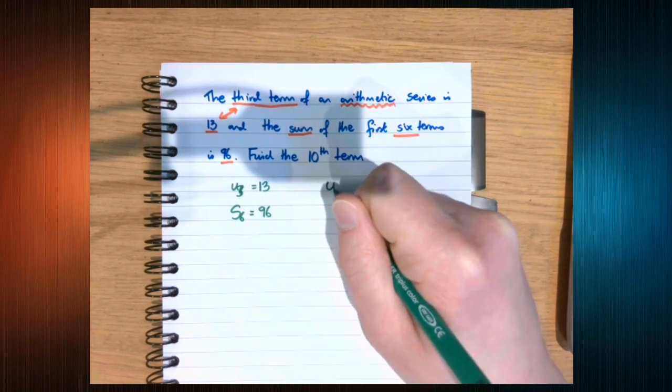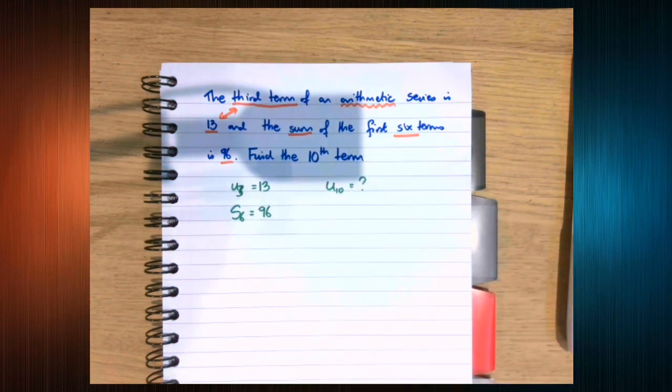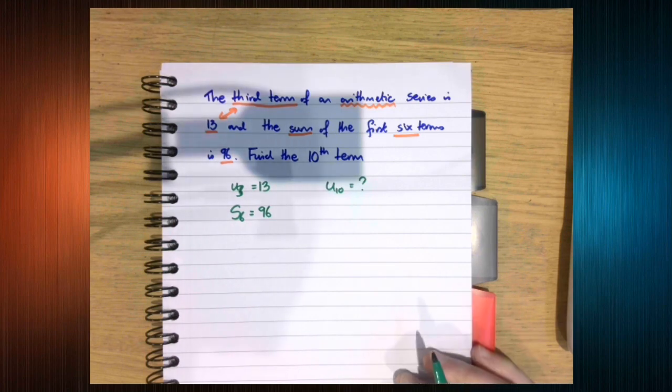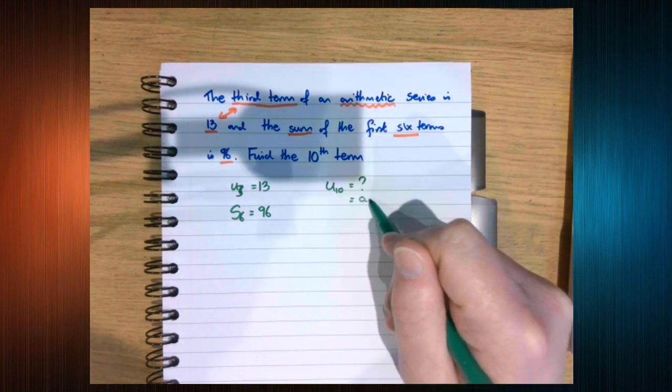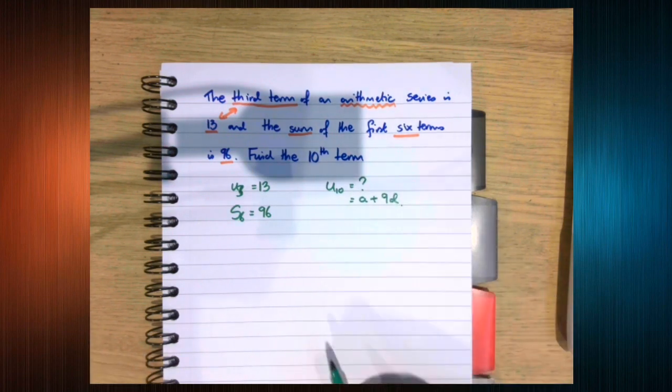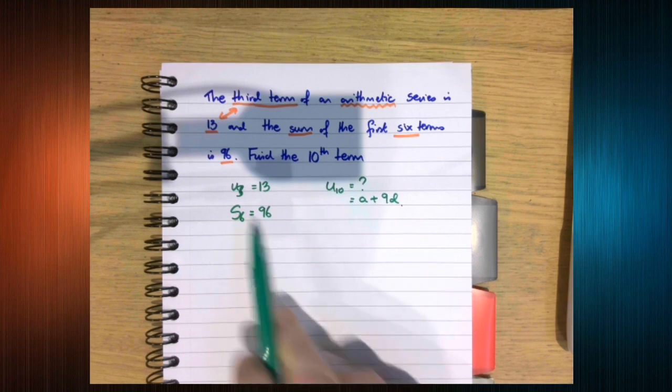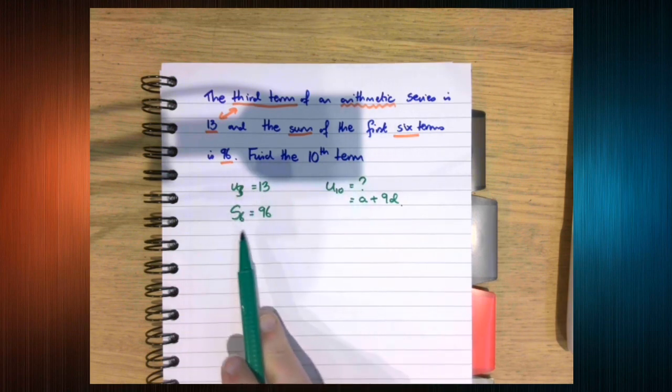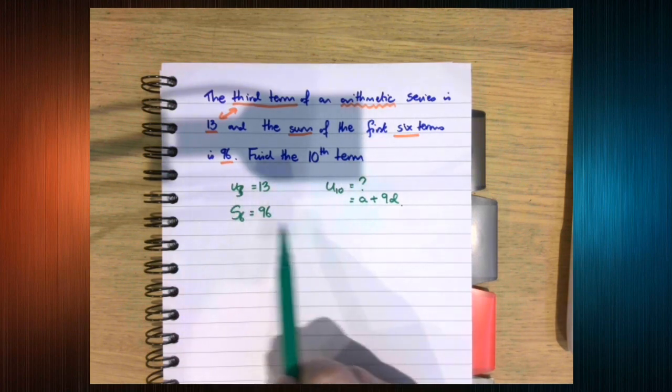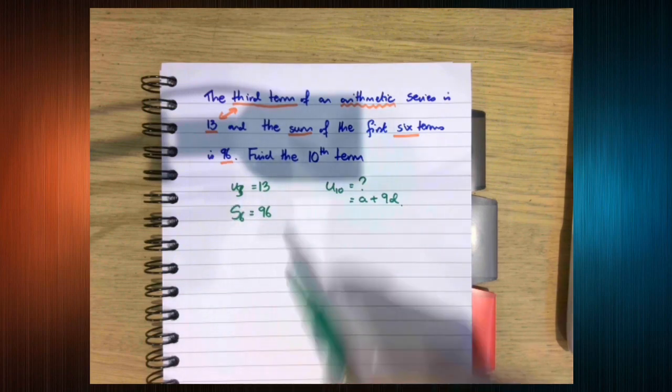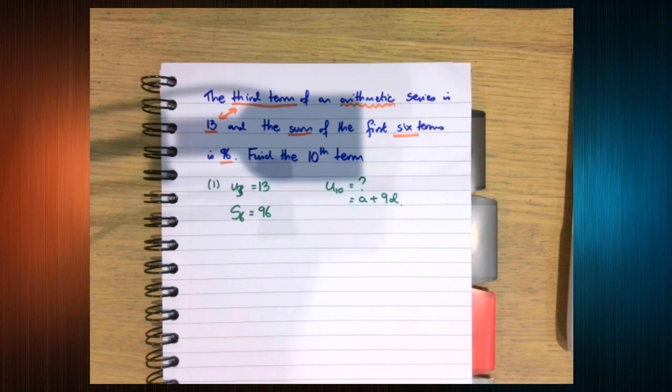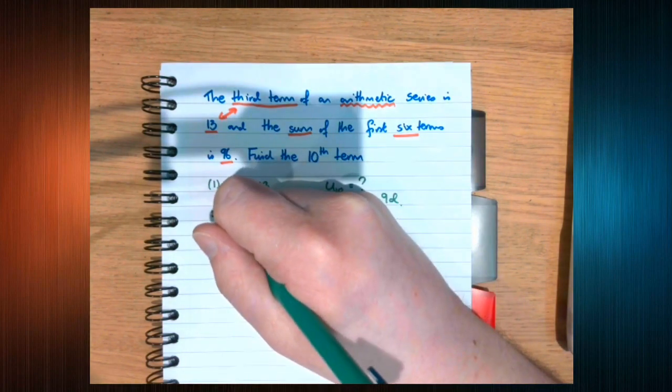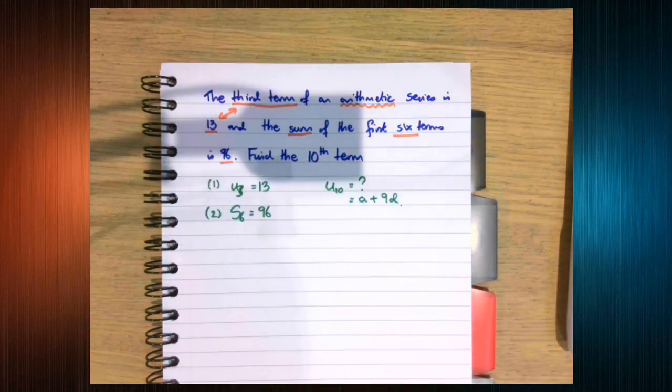And we're trying to find the tenth term. So in order to find the tenth term, what do we need? Well, we know that u10 is a plus 9d. So we need a and d. We're going to be using this information to get that. So we're going to write equation 1 in terms of a and d, and equation 2 in terms of a and d.